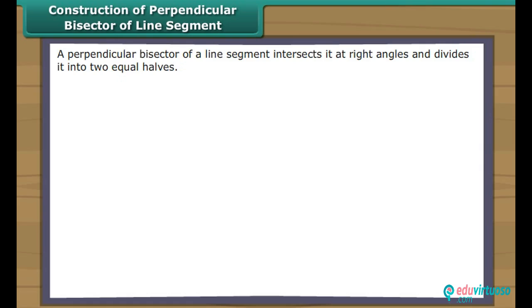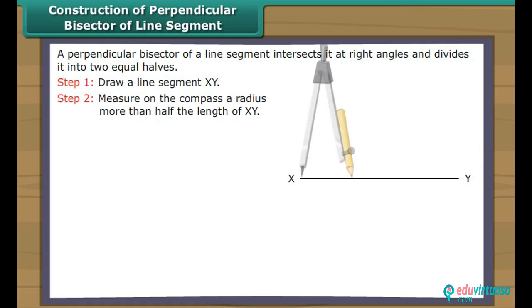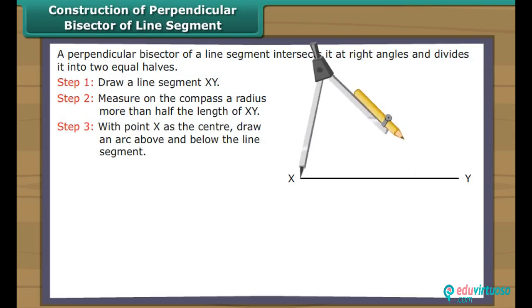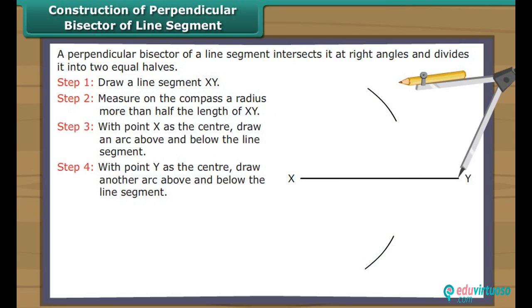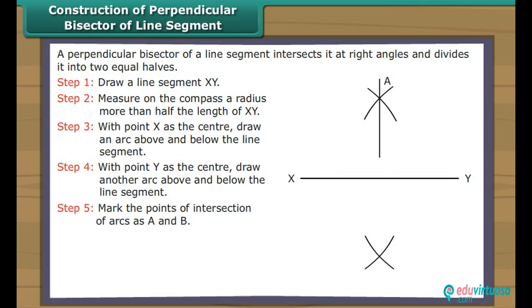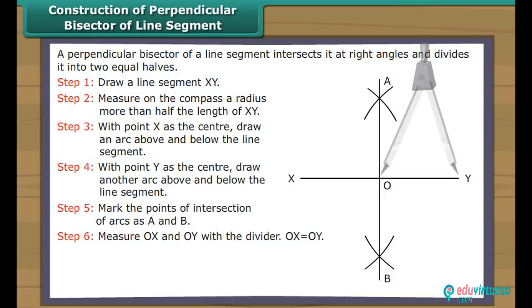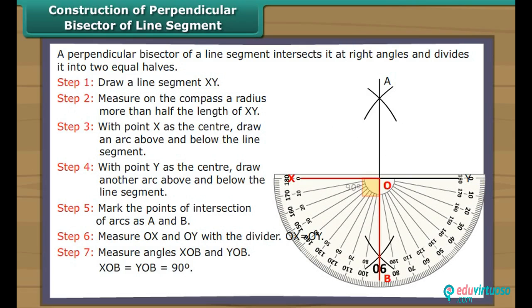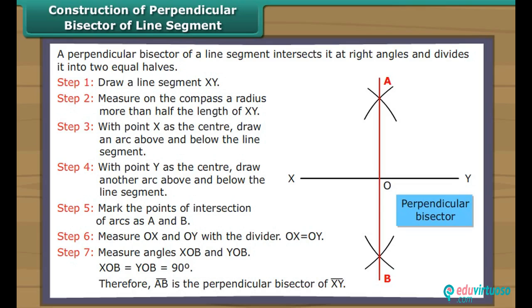Construction of perpendicular bisector of a line segment. A perpendicular bisector of a line segment intersects it at right angles and divides it into two equal halves. Draw a line segment XY. Measure on the compass a radius more than half the length of XY. With point X as the centre, draw an arc above and below the line segment. With point Y as the centre, draw another arc above and below. Mark the points of intersection as A and B. OX is equal to OY, and angle XOB equals angle YOB equals 90 degrees. Therefore, AB is the perpendicular bisector of XY.